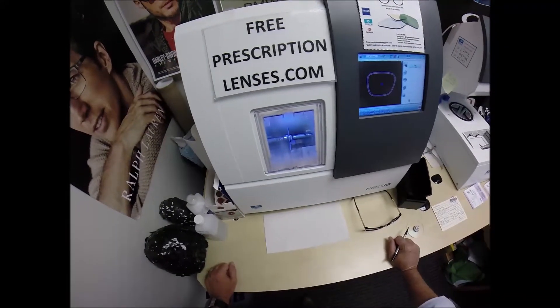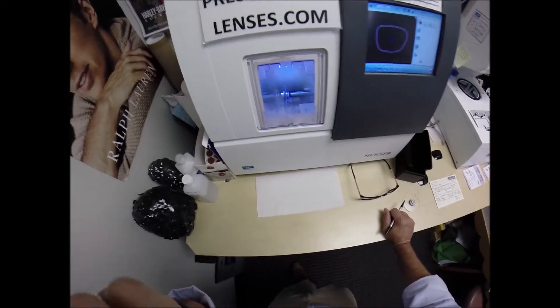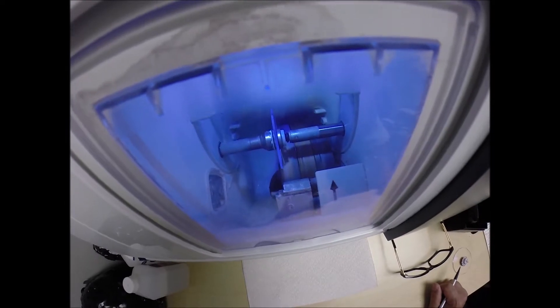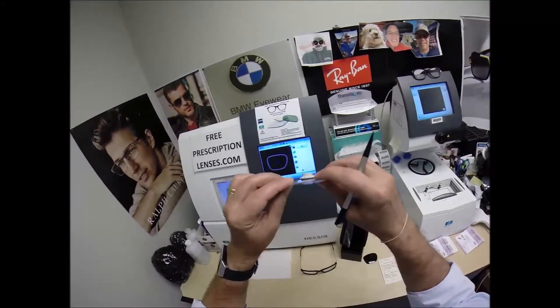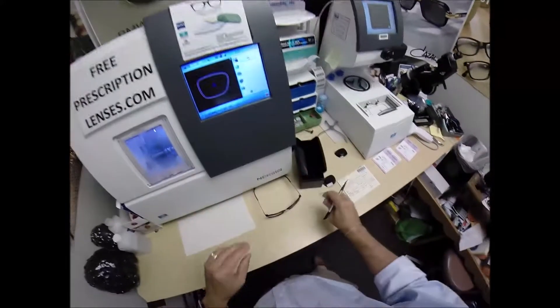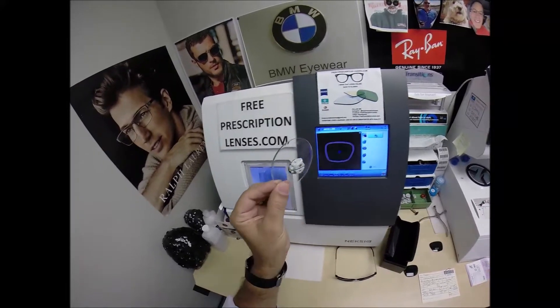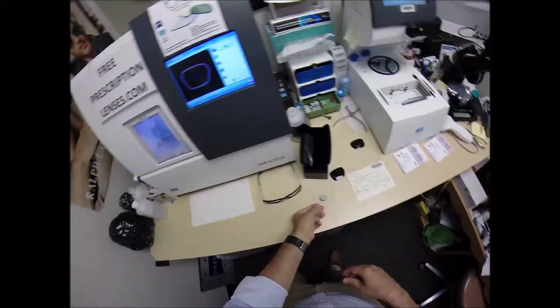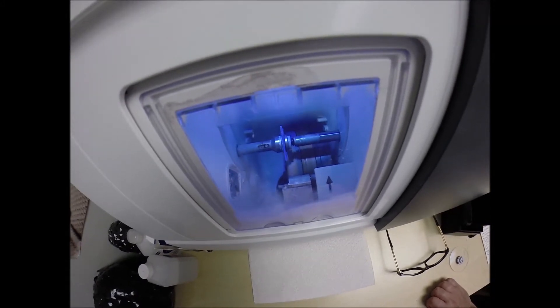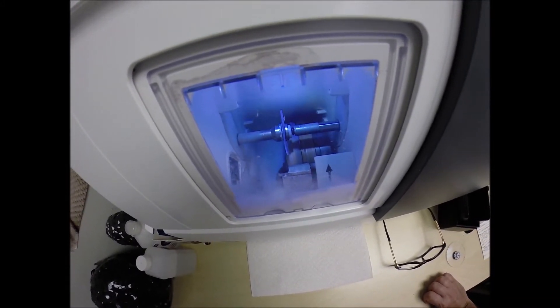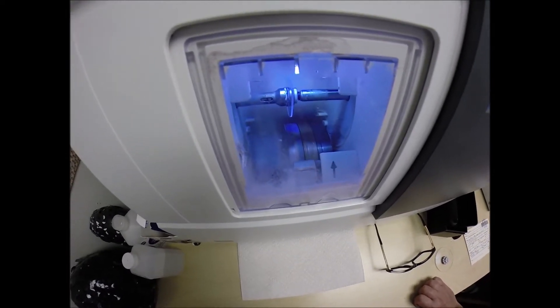Plastic, high-index plastic, and Trivex cut wet, meaning that water sprays onto the lens for the duration of the cutting cycle. Polycarbonate lenses cut dry. Water will spray onto the lens, but only for the last 20 seconds to wash away any optical debris. Polycarbonate is 40% thinner and lighter than regular plastic. It is virtually unbreakable. These are high-impact, ballistics-grade lens material.